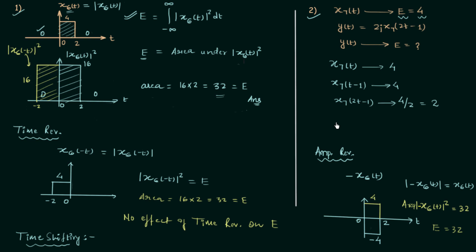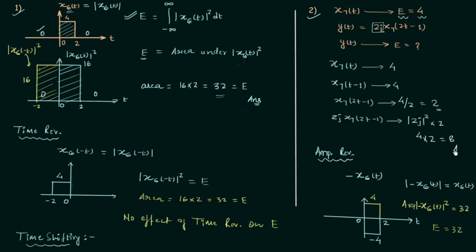Now we perform amplitude scaling: multiplying by 2j gives 2j·x7(2t − 1). The new energy is |2j|² × 2. Since |2j|² = 4, the energy is 4 × 2 = 8. So 8 is the answer to the second problem.